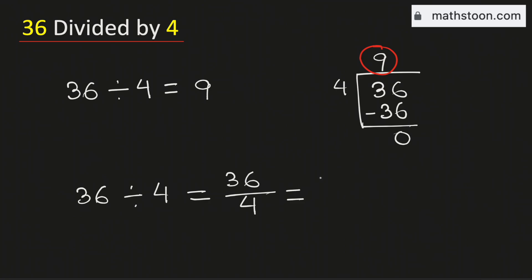In the next step, we will write 36 as 4 times 9 divided by 4.